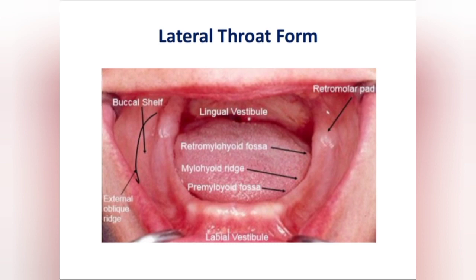This diagram is important because when you are making a mandibular complete denture, the length of the lingual flange is different in different areas. The shape is shallow in the pre-mylohyoid fossa area — depth is less — and the flange turns towards the tongue at the mylohyoid ridge, and is deep in the retromylohyoid fossa. So the length gradually increases from the pre-mylohyoid fossa to the retromylohyoid fossa.